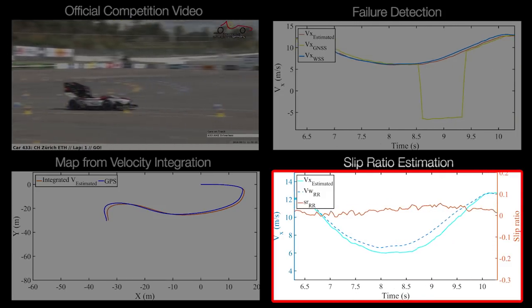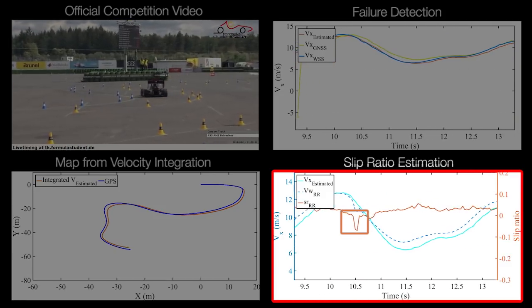The car hits a bump at this instance and the slight drop in the rear right wheel speed is captured as slip ratio.